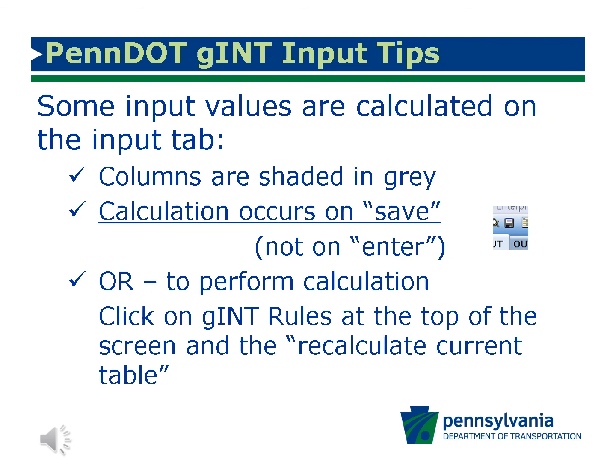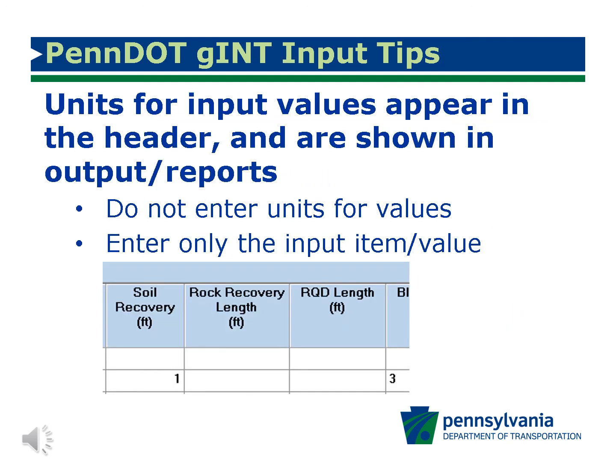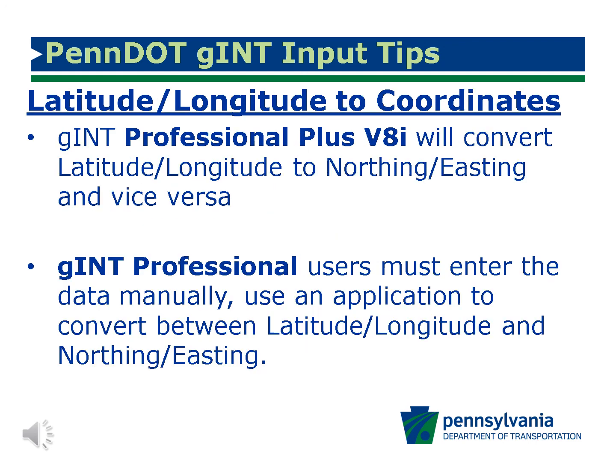Some input items are not entered manually as they are calculated on the pertinent input tab; these columns are shaded in gray. The calculation of these values will be performed either when you click on Save or by clicking on Get Rules at the top of the screen and then clicking on Recalculate Current Table. Units for input values are included in the column headers; users do not need to enter the units with the data. Input fields for latitude and longitude and northing and easting coordinates are available on the Boring Test Pit tab. Gint Professional Plus users can enter coordinates or latitude and longitude and Gint will perform the conversion automatically, while Gint Professional users will need to convert and enter the data manually.